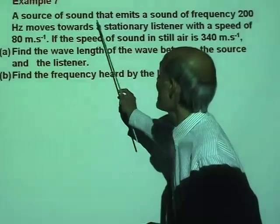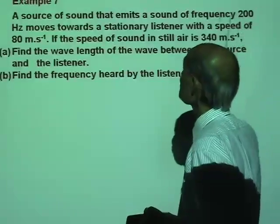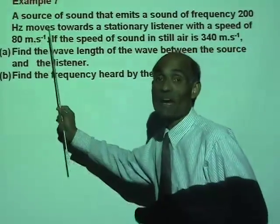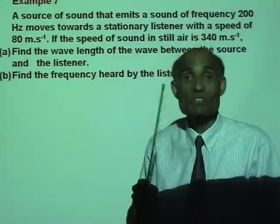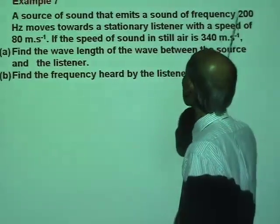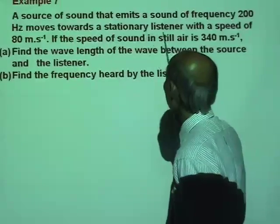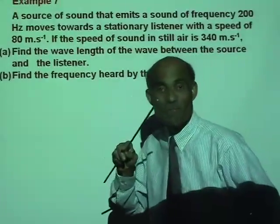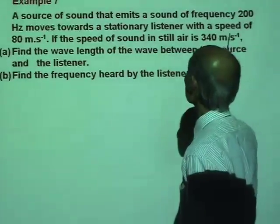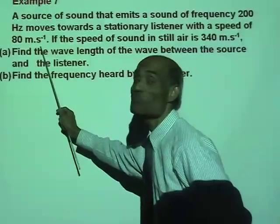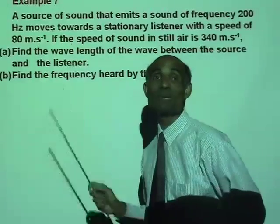A source of sound emits a sound of frequency 200 hertz — that is the actual frequency of the source, which we call F₀. So F₀ is 200 hertz. This source moves towards a stationary listener with a speed of 80 meters per second, so V_s is 80 meters per second.